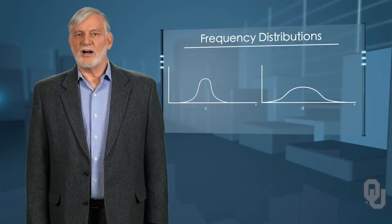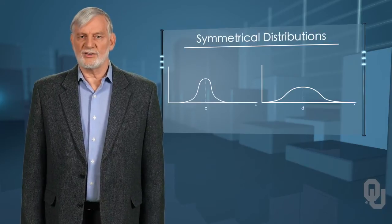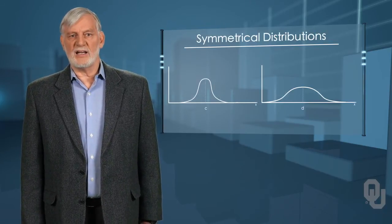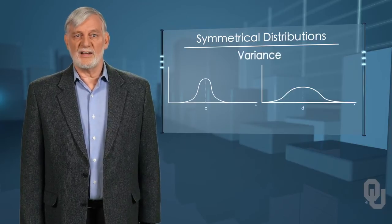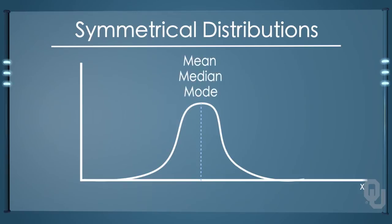Both figure C and D are examples of symmetrical distributions. They have very different spreadness in the data, which we will call variance, and take up in the next unit. For a symmetrical distribution, the mean, median, and mode are the same value. One half of the values are on each side of the mean. Remembering the relationship between the area of a frequency distribution and probability, we can conclude that the probability is one half, or 0.5, that a random draw will result in a value greater than the mean, or less than the mean.